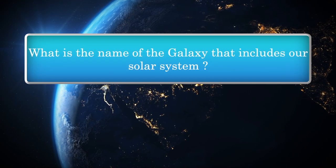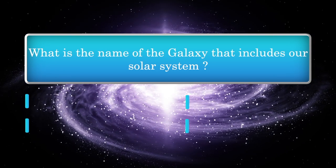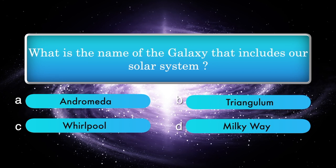What is the name of the galaxy that includes our solar system? Options: Andromeda, Triangulum, Whirlpool, Milky Way.